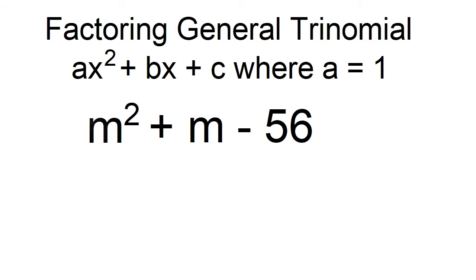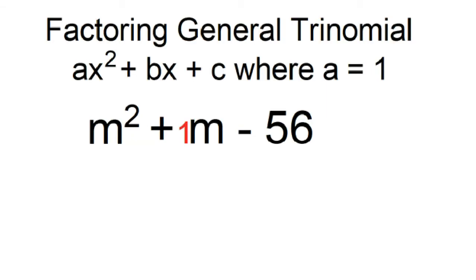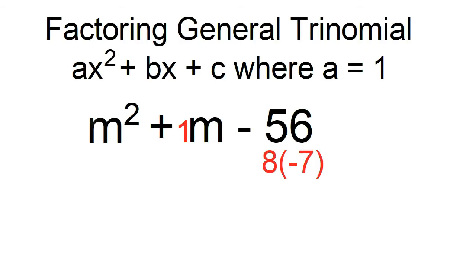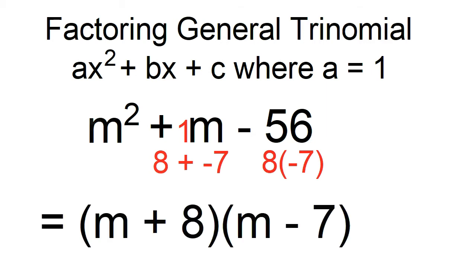Factor m squared plus m minus 56. In this example, b is 1 and c is negative 56. Think of two numbers that will give you a product of negative 56 and a sum of 1. The numbers are 8 and negative 7. The factors are m plus 8 and m minus 7.